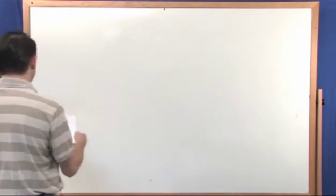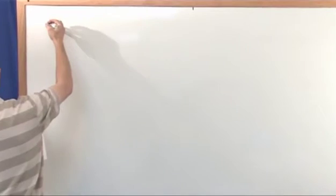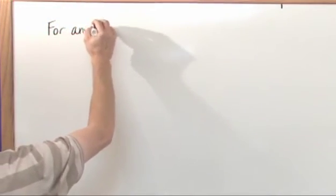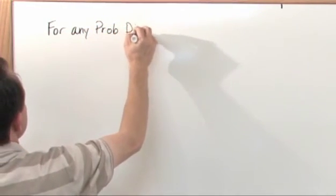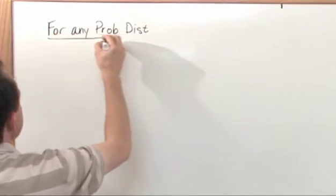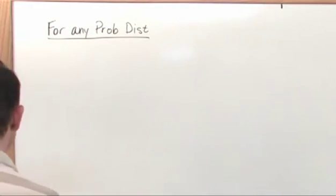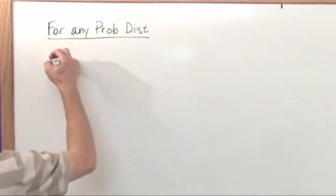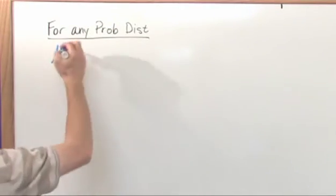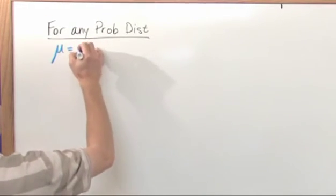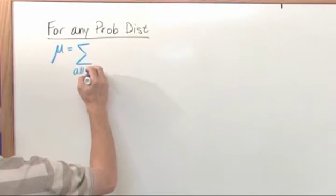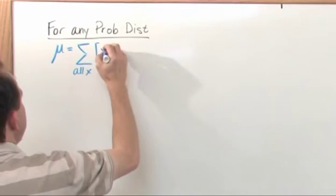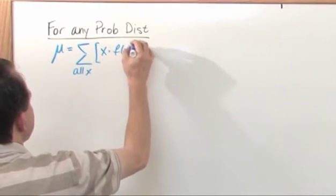So first let's go ahead and just do a little bit of review from a couple of sections ago. We know that for any probability distribution, any probability distribution you can make up, whether it's a table or a function or whatever, we know the following things because we studied this a couple of sections ago. We know that the mean, μ, of this probability distribution function is equal to the sum along all x, all values of the random variable that you're studying, of the sum of x times the probability that x will occur.